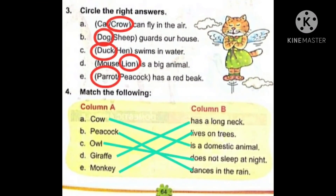The next question is: circle the right answers. Yahan pe dekhiye, har question ke saath do options diye huye hain. Jo option correct hai, usme hume circle lagana hai. Number A: cat or crow — can fly in the air? Cat or crow mein se kaun hai jo air mein fly kar sakti hai? It is crow, because crow is a bird, isliye woh fly kar sakti hai.